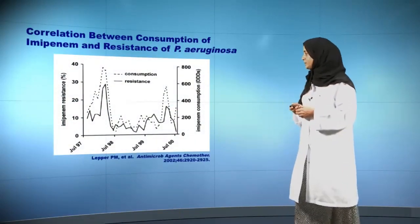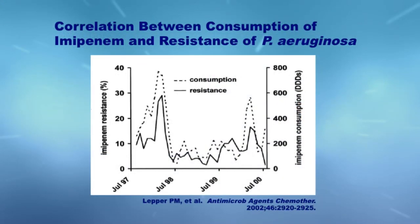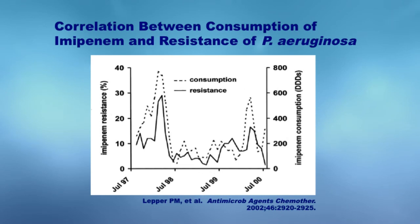This slide was produced by Leper in 2002 and shows the consumption of a specific antibiotic and its relationship to resistance. You can see that imipenem resistance and imipenem consumption go hand-in-hand — whenever there was a surge in the use of imipenem, there was a surge in resistance, specifically for Pseudomonas aeruginosa, which was included in this specific article.